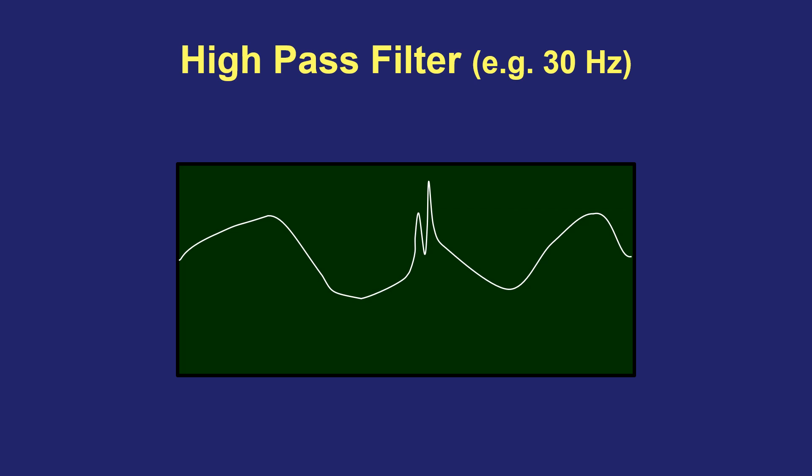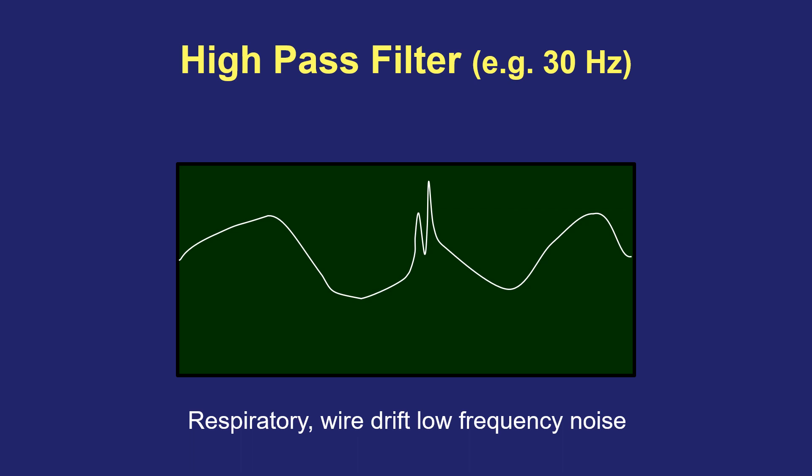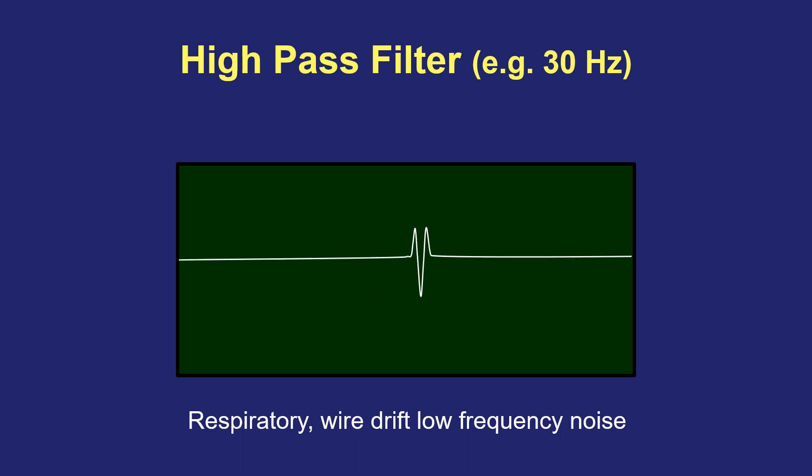Conversely, there can be low-frequency electrical signals generated around the patient — typically from movement of the wires and breathing — that create an undulation in the baseline. This low-frequency noise can also obscure signals of interest. For this purpose, we have a high-pass filter, which allows through the higher-frequency signals and eliminates the low-frequency signals. For an intracardiac bipolar electrogram, the high-pass filter is usually set at about 30 Hz. This cleans up the drifty baseline signal, showing much more clearly the signal of interest.